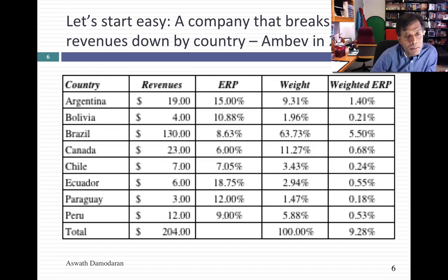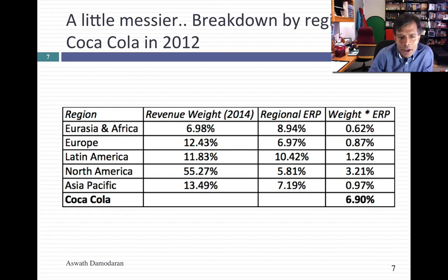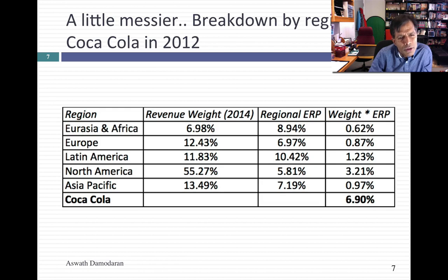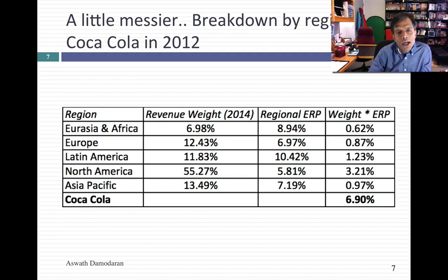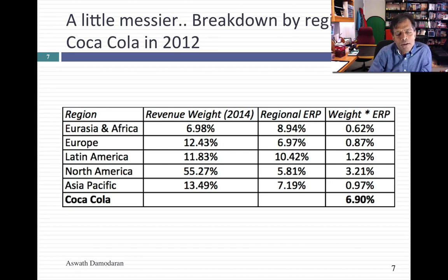That was easy because MBEV broke its revenues down by country. Here's a slightly messier case: Coca-Cola. Coca-Cola doesn't break its revenues down by country — perhaps because they're in 70 countries — so they break it down by region. You can almost do what I did on the previous page using regional weighted averages. I did that for Europe, Latin America, North America, and Asia using regional averages from 2012. They also bundle Africa, the Middle East, and Eurasia together, so I took the weighted average of those regions, giving 8.94% for that combined region, and I get a weighted average for Coca-Cola.